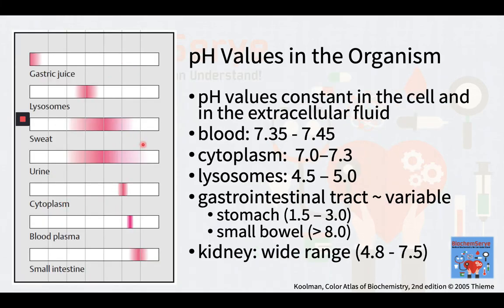The pH values in the cell and in the extracellular fluid are kept constant within narrow limits. In the blood, the pH value normally ranges only between 7.35 and 7.45. On the other hand, the pH value of the cytoplasm is slightly lower than that of blood, at 7.0 to 7.3.